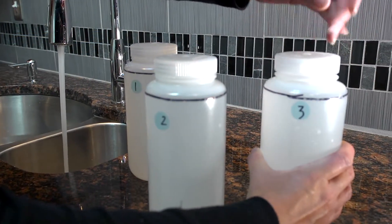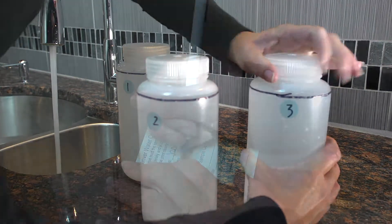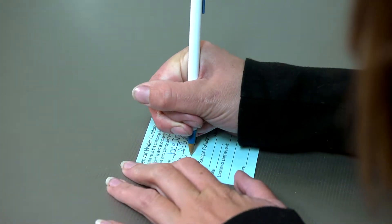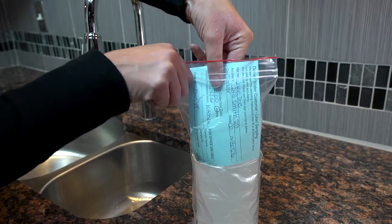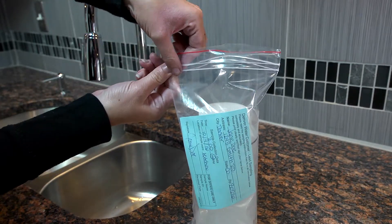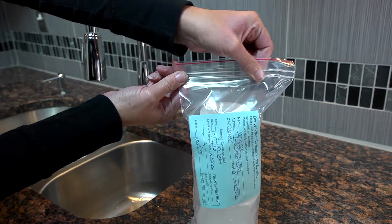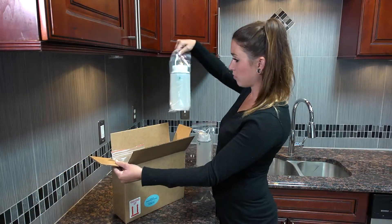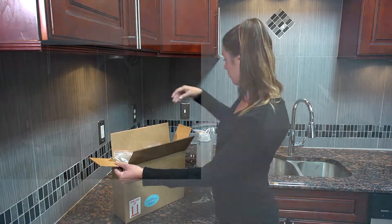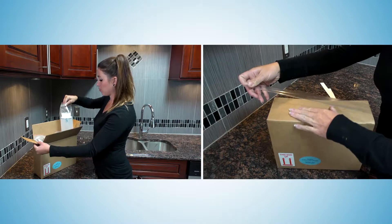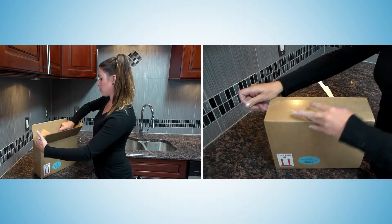When you're done, make sure the lids are on tight. Fill out the blue information card. Place the first bottle into the plastic bag and seal it with the blue card inside. Put the remaining two bottles in the other bags and seal them. Place the bottles upright in the box and tape it shut.